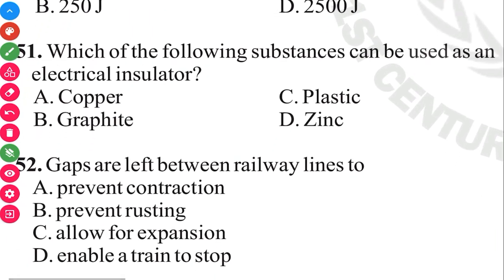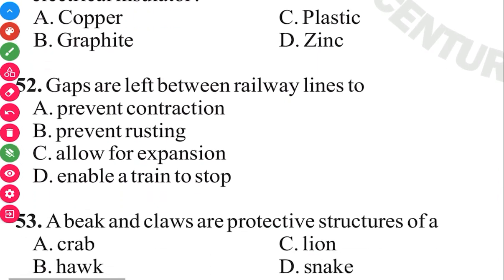Question 52. Gaps are left between railway lines to allow for expansion. The answer is to allow for expansion as a result of heat. Once there's heat, there'll be expansion. So allow or give room for expansion.